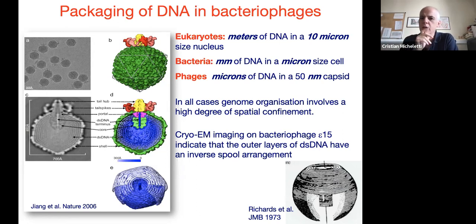At the lowest possible level—phages, which are viruses that attack bacteria—you have microns of DNA in a small protein capsid that is typically about 50 nanometers in diameter. A very early view on how DNA is organized at such scales is provided by beautiful cryo-EM pictures.